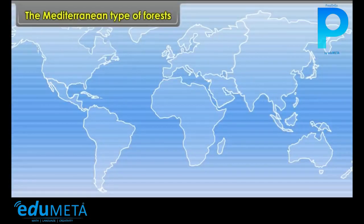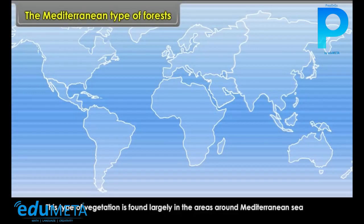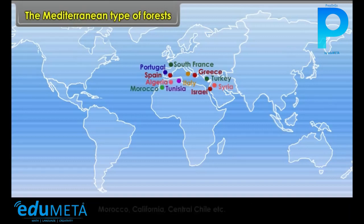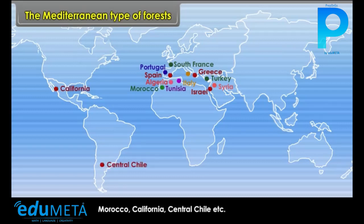The Mediterranean Type of Forests: This type of vegetation is found largely in areas around the Mediterranean Sea in Spain, South France, Italy, Greece, Portugal, Syria, Israel, Turkey, Tunisia, Algeria, Morocco, California, and Central Chile.